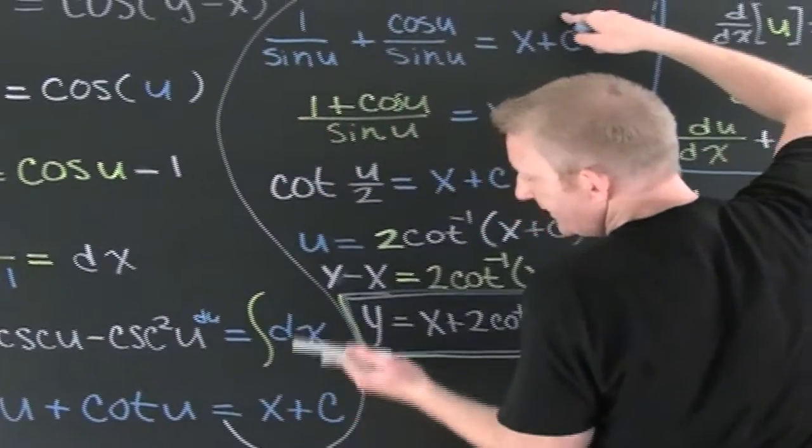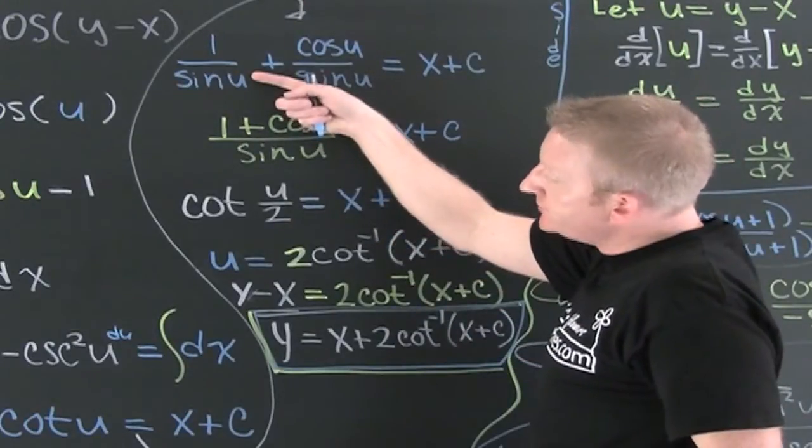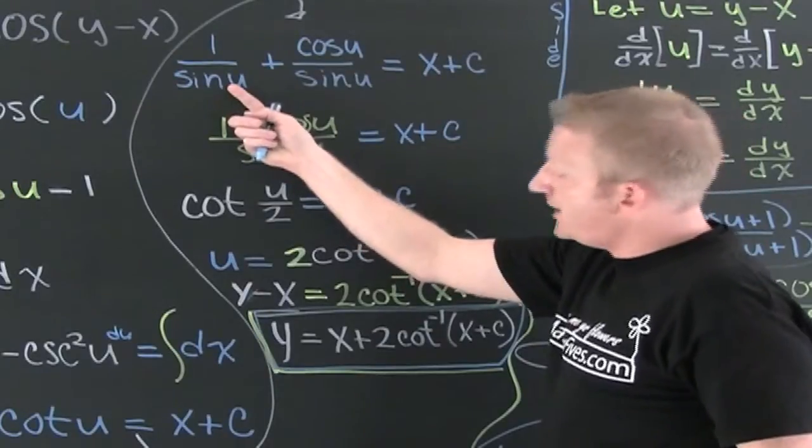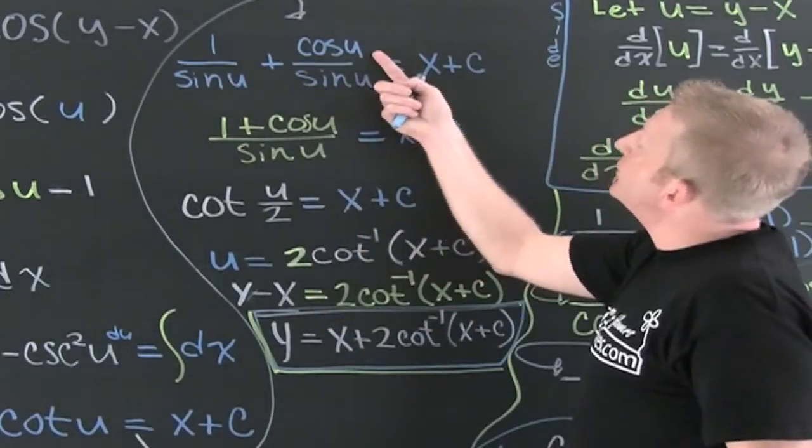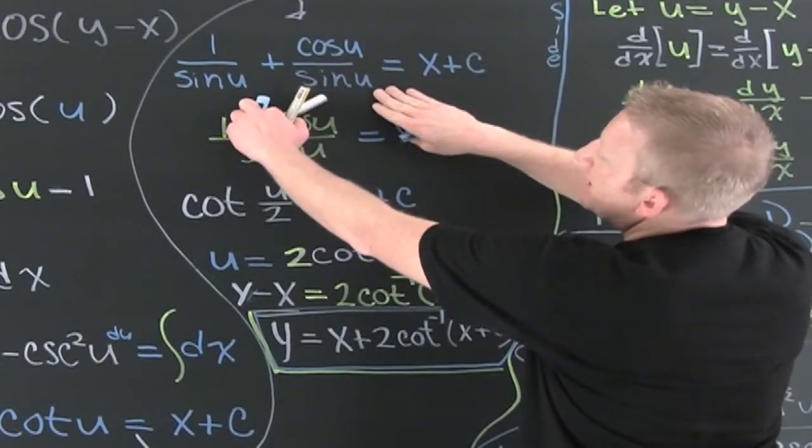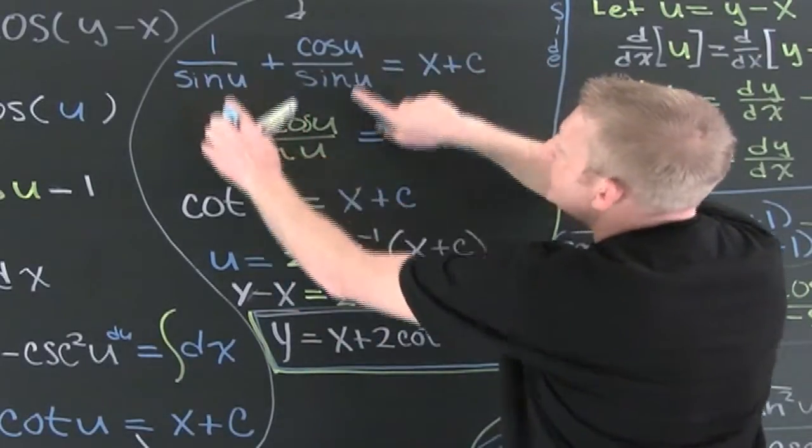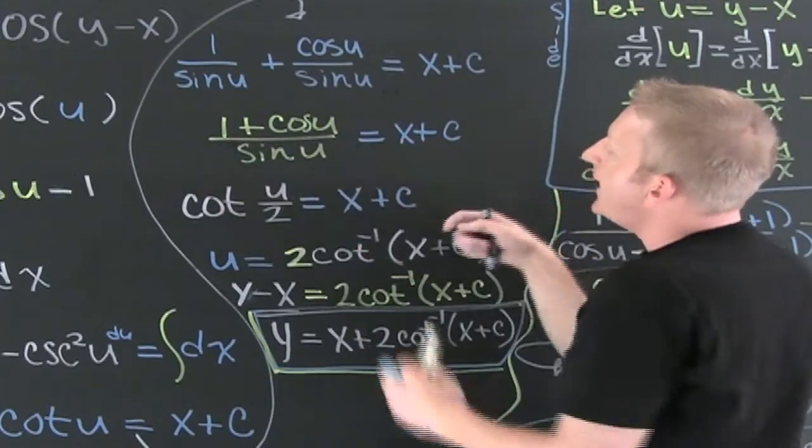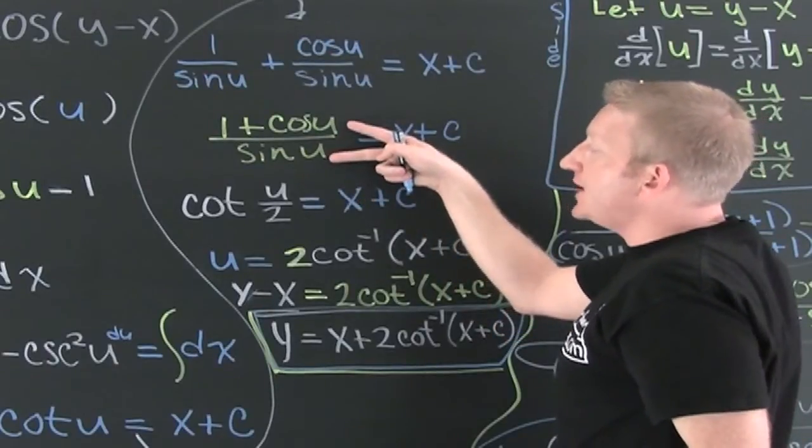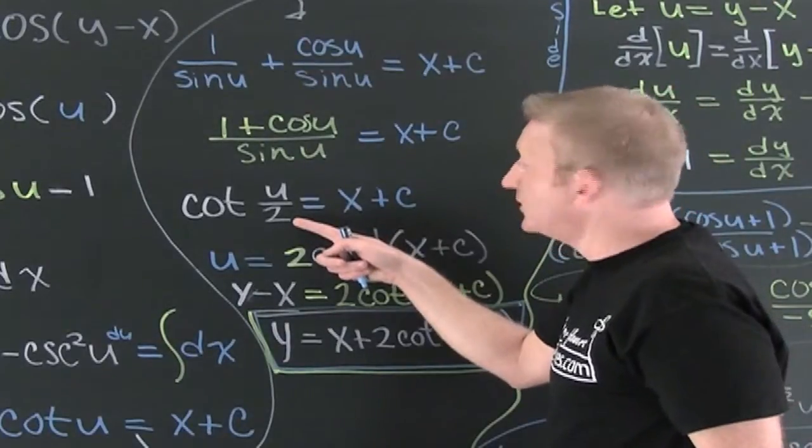The cosecant of u is one over the sine of u, and the cotangent is the cosine of u over the sine of u. I have the same denominator so I can add their numerators. That's a trigonometric identity—that's the cotangent of u over two, a half angle.